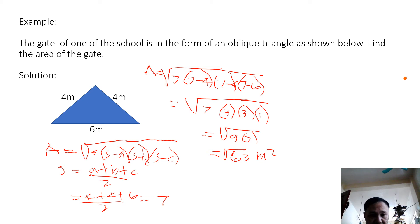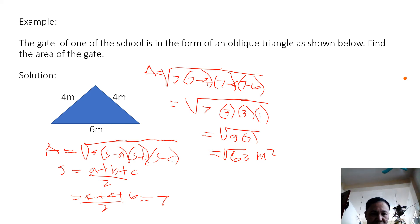Note that the one-half B times height formula could not be used here because the height is not given. Use Hero's formula only when all three sides are given. Memorize the formula: the square root of S times S minus A, S minus B, S minus C, where S equals A plus B plus C all over 2. We will be using Hero's formula whenever the three sides are given.